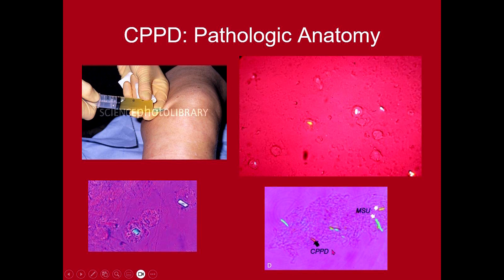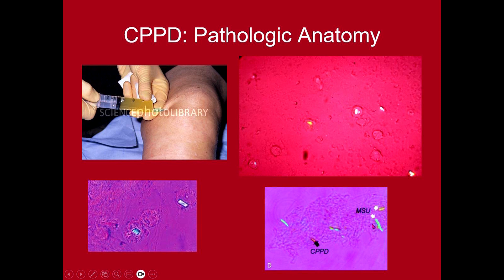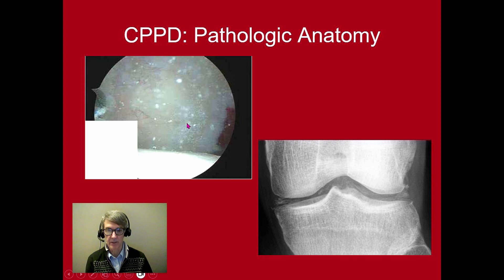Here's a comparison of calcium pyrophosphate deposition crystals compared to gout — see how the gout crystals are more needle-like, and notice that they're yellow when perpendicular, opposite to the CPPD crystal. One can actually see cartilage calcium along the cartilage if one has pathologic anatomy, like with a joint replacement, and the calcium can also be seen on X-ray deposited along the cartilage.